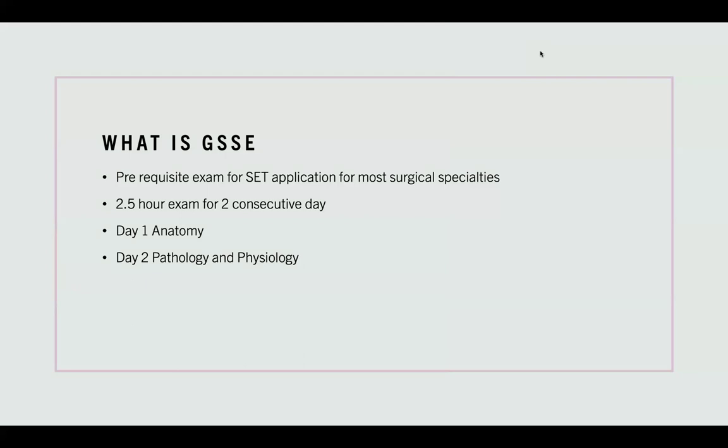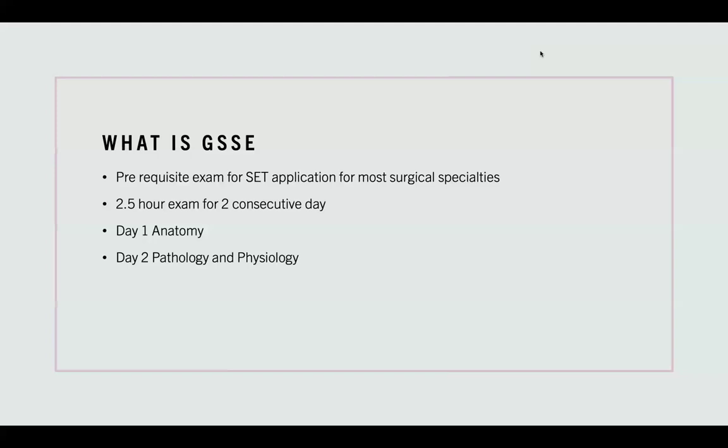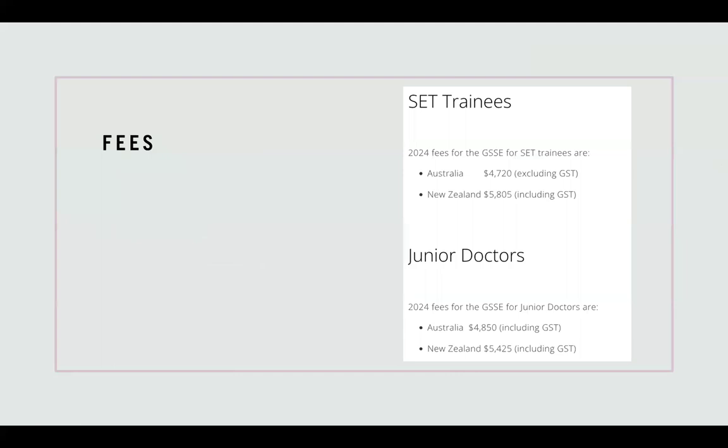So what is the GSSE exam? Well, if you found this video you probably already have a pretty good idea, but basically it's a prerequisite exam for most applications for surgical specialties in Australia. It's a two-and-a-half hour exam on two days, one after another. It happens three times every year — one in February, one in June, and one in October. The best place to start is to thoroughly read the GSSE website about what it is, how to apply, know your dates, know the fees involved — which is $4,850 Australian — and the sections you'll be covering.